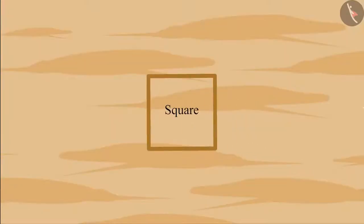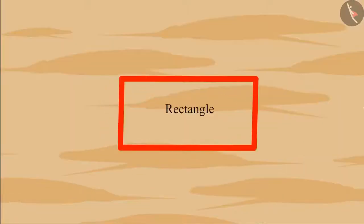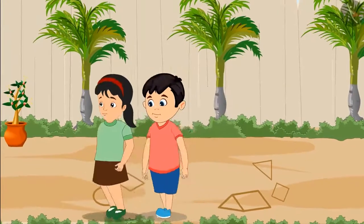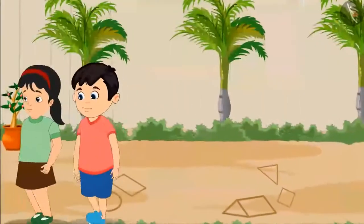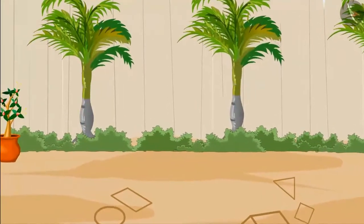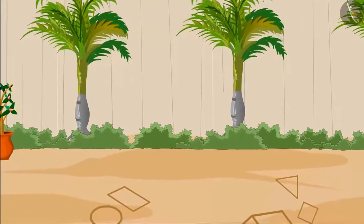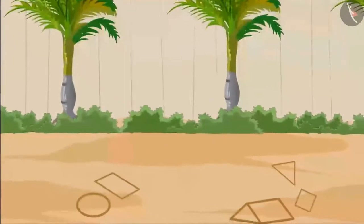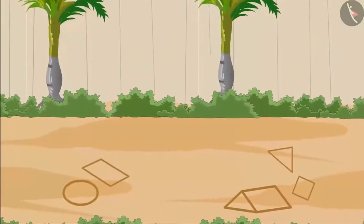And this one? It is a square because it is a shape made of four equal sides. And this is a rectangle. After playing this game, Chootu and Pinky went to do their school homework — let's see what they are doing.